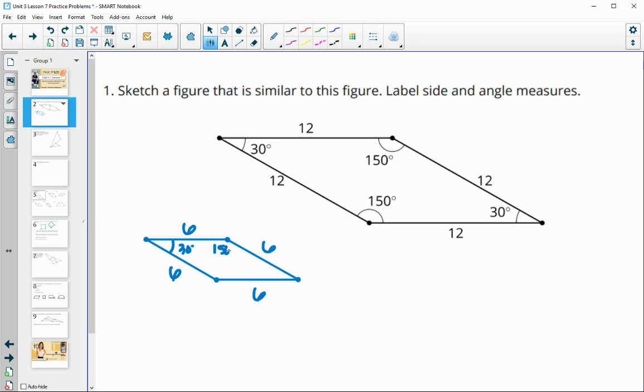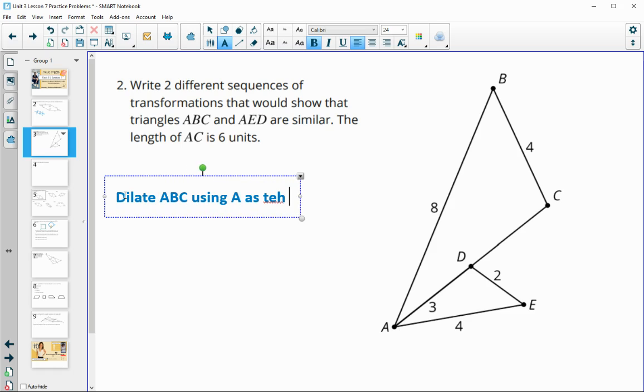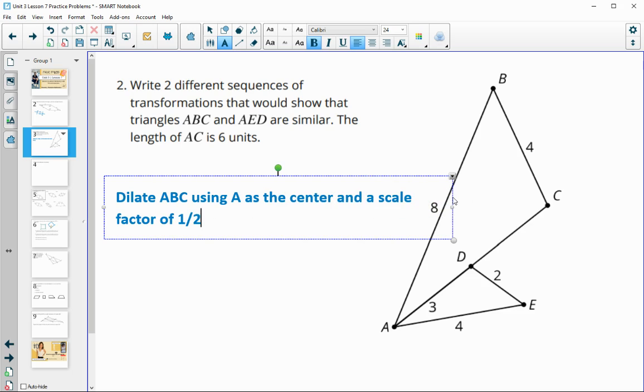Number two: write two different sequences of transformations that would show that triangle ABC, this bigger one, and AED are similar. And then they're telling you that the length of AC is six. So two different sequences of motions here. We could dilate triangle ABC using A as the center and a scale factor of one-half to make it smaller, so dividing by two.